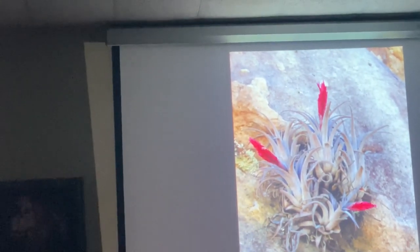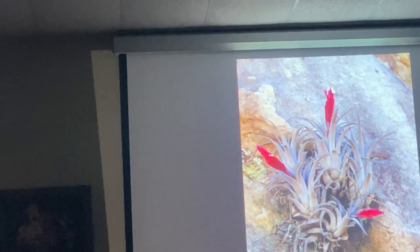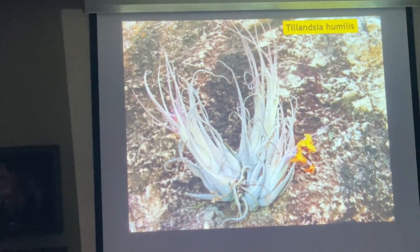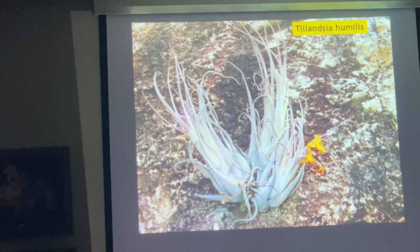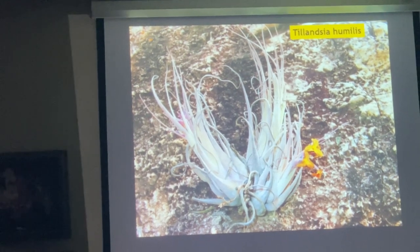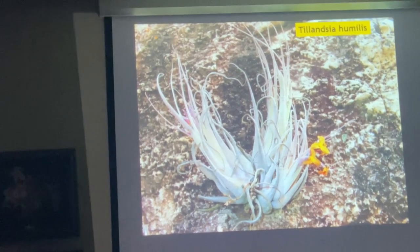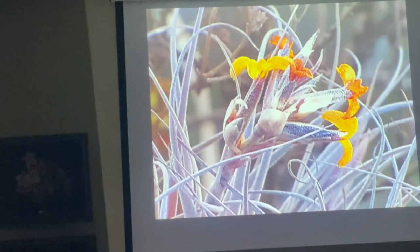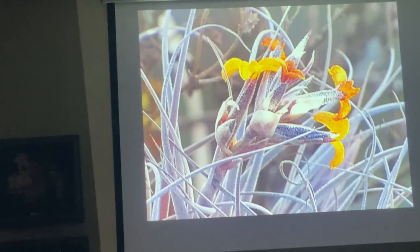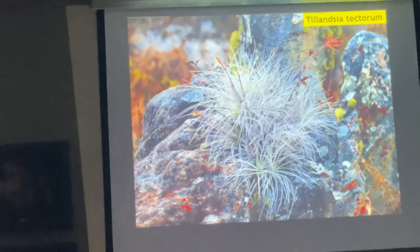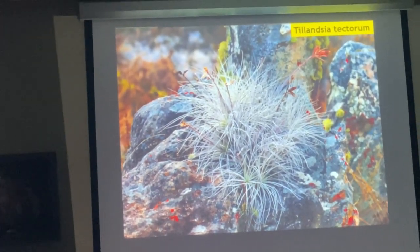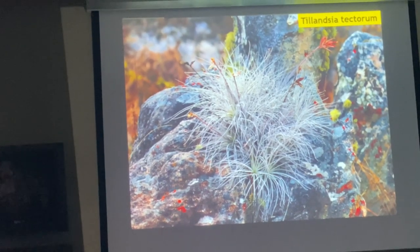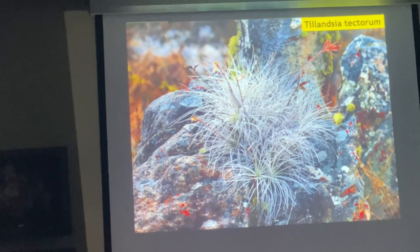There are many different forms — some with bracts more red, some more pink. Another Tillandsia that grows here is one of the few with a yellow flower — Tillandsia humilis — which is widely distributed. It's sometimes hard to find it with a pink flower. Tillandsia tectorum is also a widespread species. Some people divide this into many different species or subspecies.